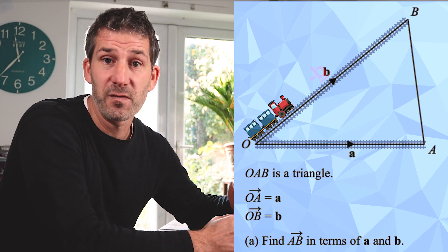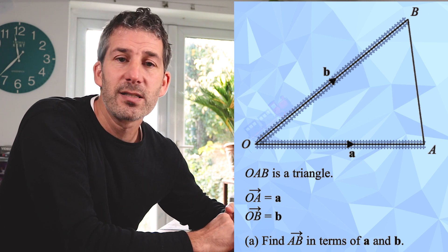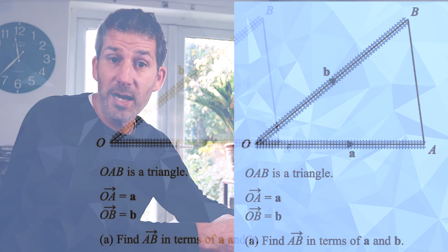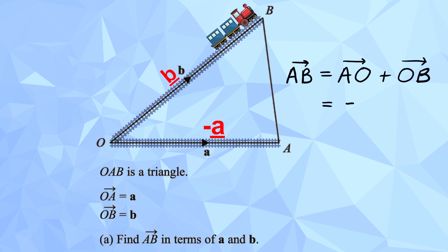Now, the question is asking us to find the vector that goes from A to B, but at the moment there isn't a train line that takes us directly from A to B. There is a line on a diagram connecting A and B, but it doesn't have a little letter next to it, so currently there's no train journey that takes us from A to B. But we can make that journey using the train lines that we do have. All we need to do is to go from A to O, and we know that that's called negative a, and then from O to B, and that's vector b. So we could describe the vector A to B as negative a add b.